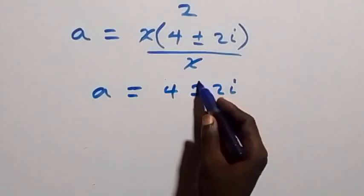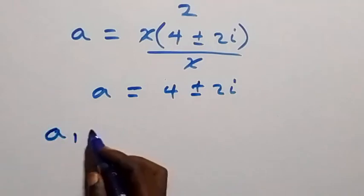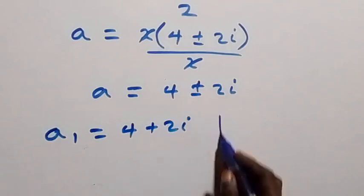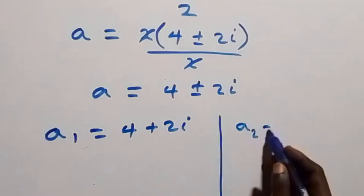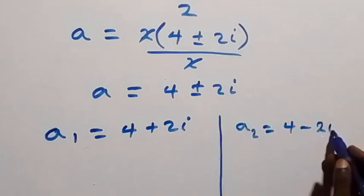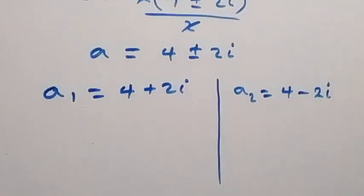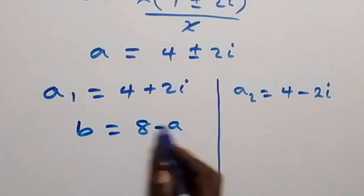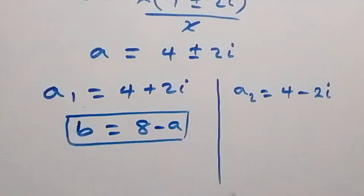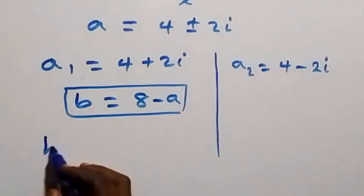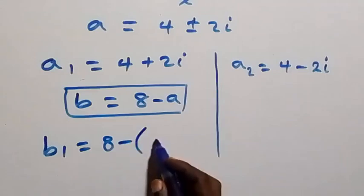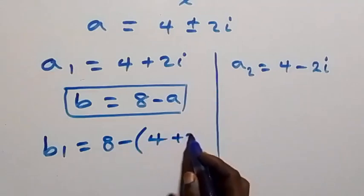So we have two complex solutions. A1 equals to 4 plus 2i, and the second value A2 equals to 4 minus 2i. We can get the corresponding values of b from the relation b equals to 8 minus a. So b1 equals to 8 minus a1, which is 8 minus (4 plus 2i).